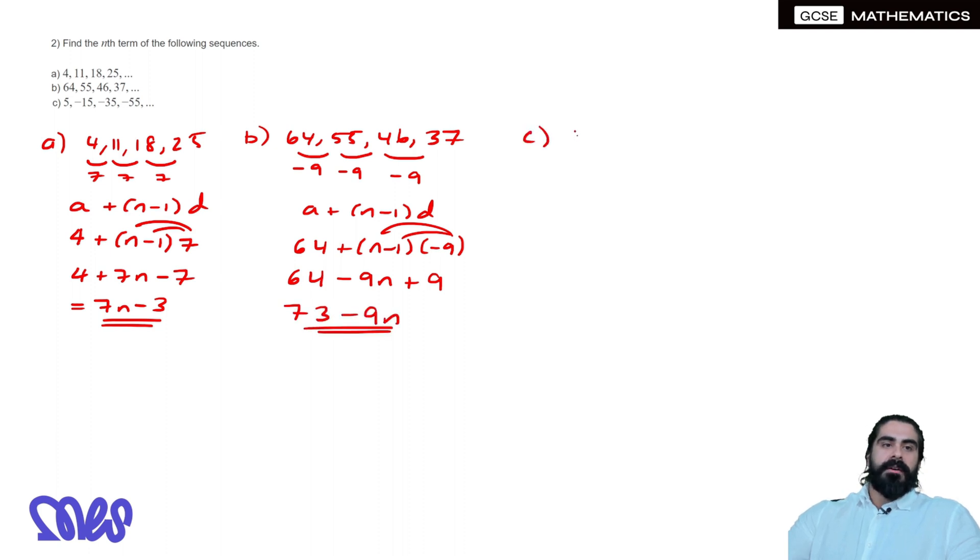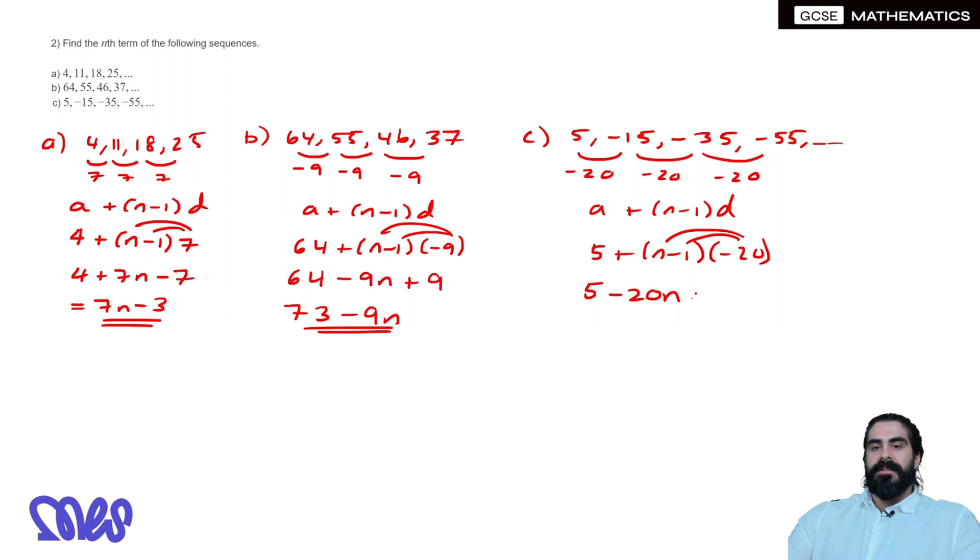And the final one we have 5, minus 15, minus 35, and minus 55, so here you can see we're going down by 20, we're minusing 20 each time, so A plus N-1 D, the first term is 5 plus N-1 times minus 20. Multiply in the minus 20, so we get 5, N times minus 20 is minus 20N, minus 1 times minus 20 is plus 20, and we simplify 5 plus 20 is 25, minus 20N is our solution now to part C.